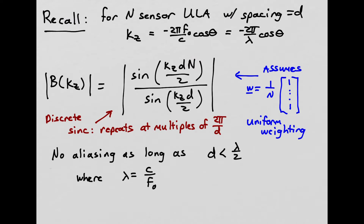In a previous video we derived the beam pattern for an N-sensor uniform line array with spacing D, as a function of the vertical wave number KZ. KZ, as we've defined it, is 2π·F0/C times cosine θ, where F0 is the center frequency of the narrowband plane wave, C is the propagation speed, and θ is the angle of arrival with respect to the Z axis. This can also be written as −2π/λ · cosine θ, because the wavelength λ is defined as C/F0.